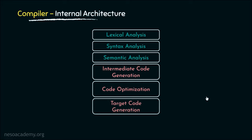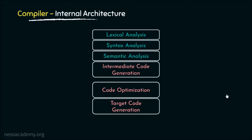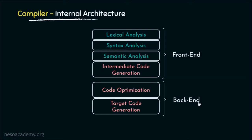Phase-wise, the first three phases are called the analysis phase, whereas the remaining three are known as the synthesis phase. However, from a software's perspective, the first four phases — that is the lexical, syntax, and semantic analysis phases, along with the intermediate code generation phase — are called the frontend. And the remaining two, that is the code optimization and the target code generation phase, are called the backend.